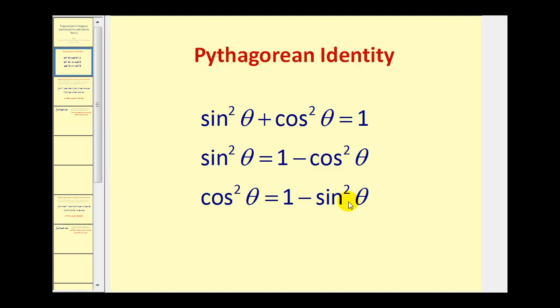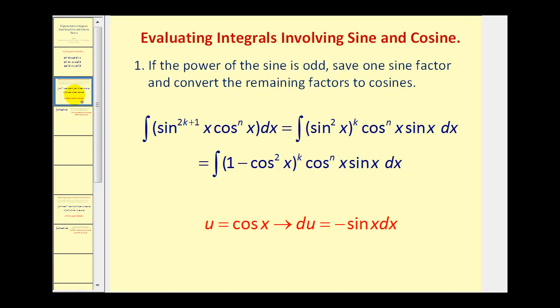We're going to take a look at three cases. The first case is when the power of sine is odd. What we're going to do is save one factor of sine and convert the remaining factors to cosine. This sine has an odd power on it — we take this odd power of sine, save one factor of sine, and leave the remaining even factors of sine.